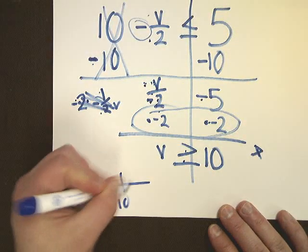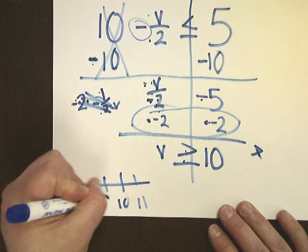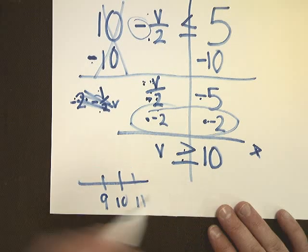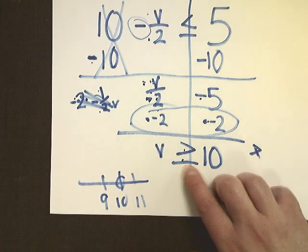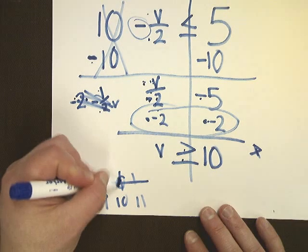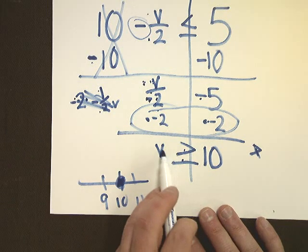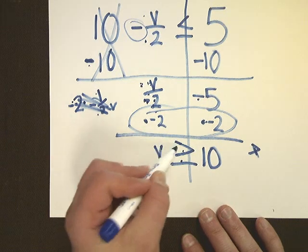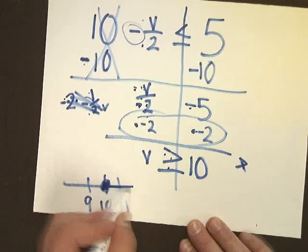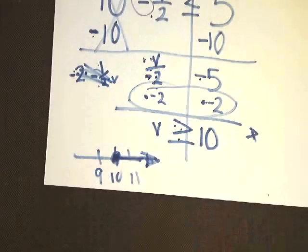To graph, it's real simple. Go to 10 on your little graph. If you have one made, that would be convenient. I'm going to circle 10. There's a line under it, so 10 is part of the answer, so I'm going to fill it in. And then I look at V and its relationship. V's on the big end, so V's greater because it's big. And it goes up, and that is it.